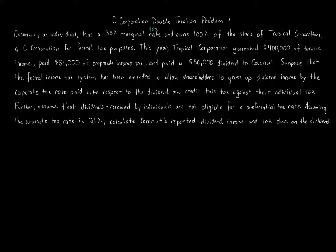In more advanced videos we'd compare C-Corporation versus S-Corporation versus partnerships. But right now, it's just an entity that's a C-Corporation. This year, Tropical Corporation generated $400,000 of taxable income, pays $84,000 of corporate income tax — which is 21%, as stated — and paid a $50,000 dividend to Coconut. That dividend was paid after the income was already taxed.